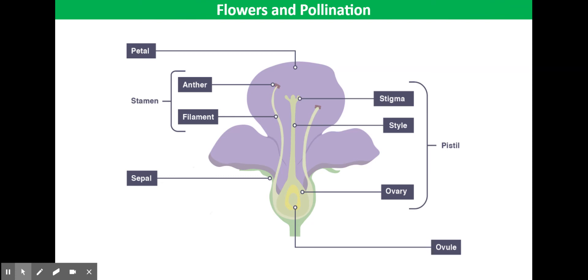They produce a moderate amount of pollen grains but don't need to produce as many as wind pollinated flowers as insects are very effective pollinators. Pollen grains are sticky and spiky to attach to insects.